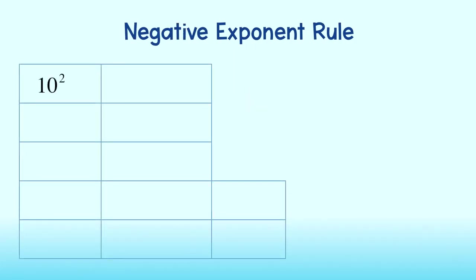Next, we will take a look at the negative exponent rule. To start, let's put up a number in exponential notation with a base of 10, say, 10 to the second power. The value of this number is 10 times 10, or 100.